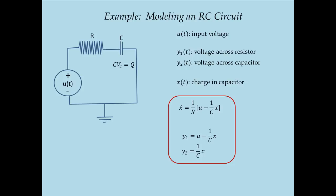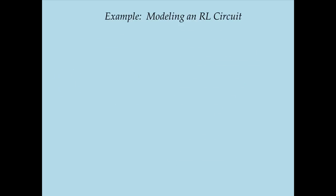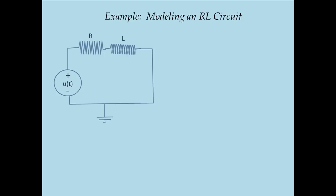I want to go through an example of developing a state-space model of an RL circuit. For an RL circuit, I'm going to have an input voltage source U of T, a resistor of resistance R, and an inductor of inductance L. I'll assume that both are linear devices.